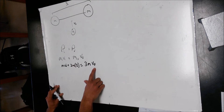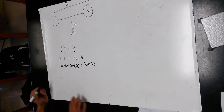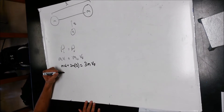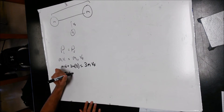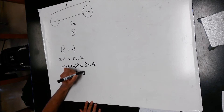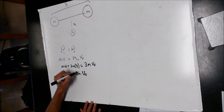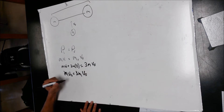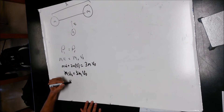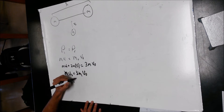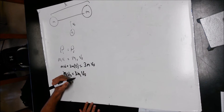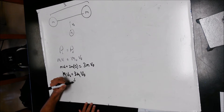That's what we're going to solve for. Simplifying, MV0 equals 3MVF. You end up with your final velocity equaling one-third V0.